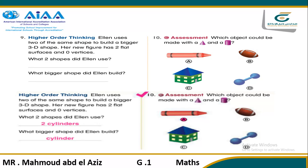Another question: which object would be made with a cone and a cylinder? Look at the shapes here. The answer is letter A — it has a cylinder and a cone.